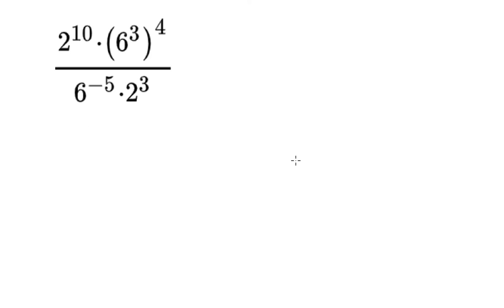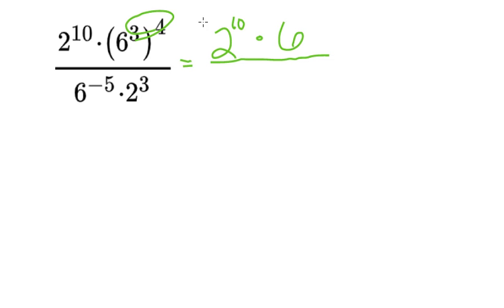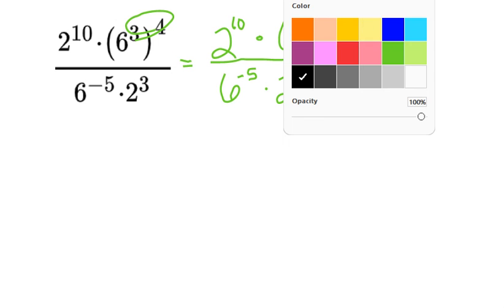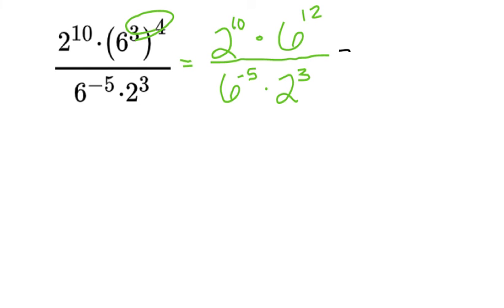The last type of question — you might see something like this one, which is pretty similar to what we've already done. The only difference here is that we see a negative. When I get started on this problem, I'm going to start by evaluating my power-to-a-power. You're going to notice that I show a lot of work — the more work you show, the fewer mistakes you're going to make. So here, 2 to the power of 10 — can't really do anything with that. Then I evaluate my power-to-a-power: 6 to the power of 3 times 4, which is 6 to the power of 12. Then I've got 6 to the power of negative 5 times 2 to the power of 3. You should recognize that negative exponent as something you need to deal with before solving.